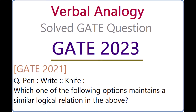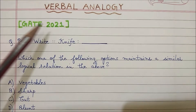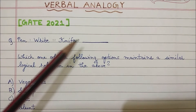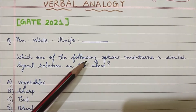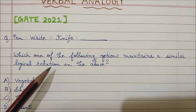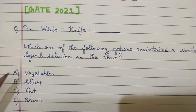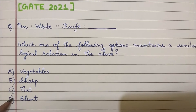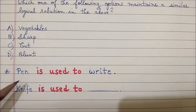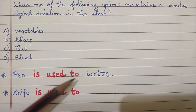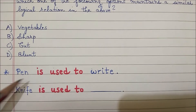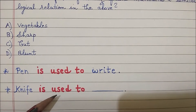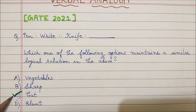Verbal Analogy solved — GATE 2021 question: Pen is to write, knife is to dash. Which one of the following options maintains a similar logical relation? Option A: vegetables, Option B: sharp, Option C: cut, Option D: blunt. Making a sentence — Pen is used to write, similarly knife is used to dash. Knife is used to cut. So the correct answer is Option C: cut.